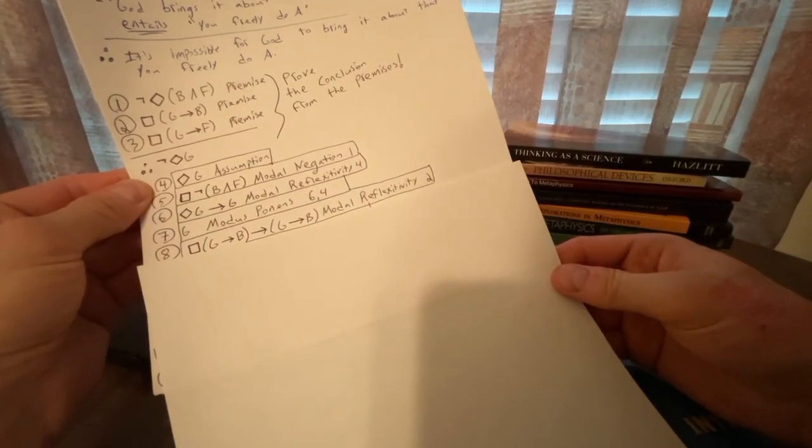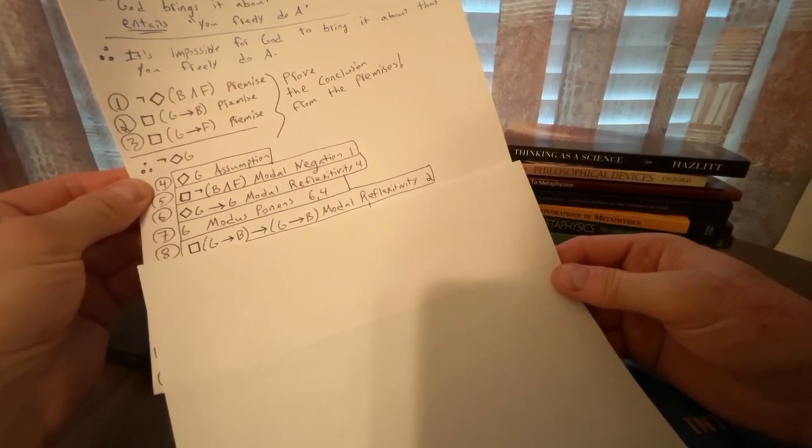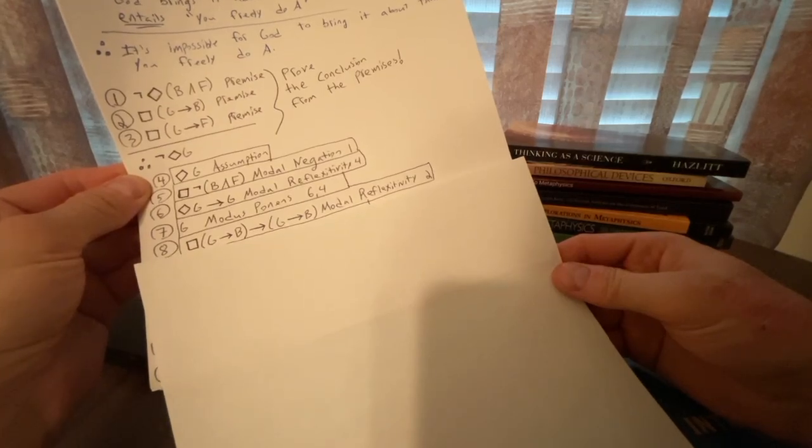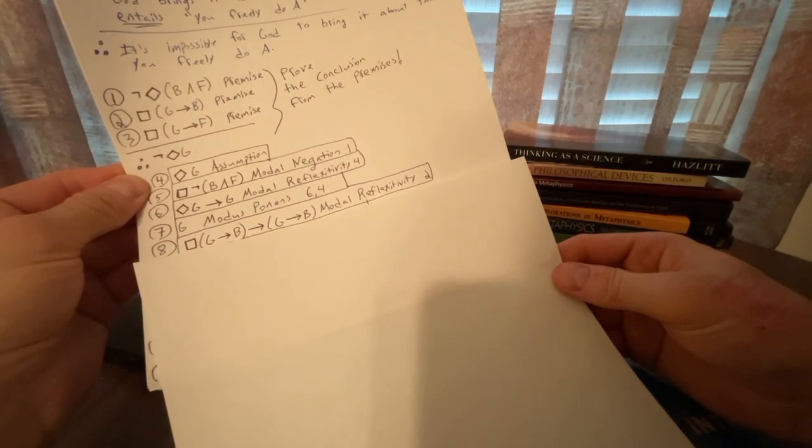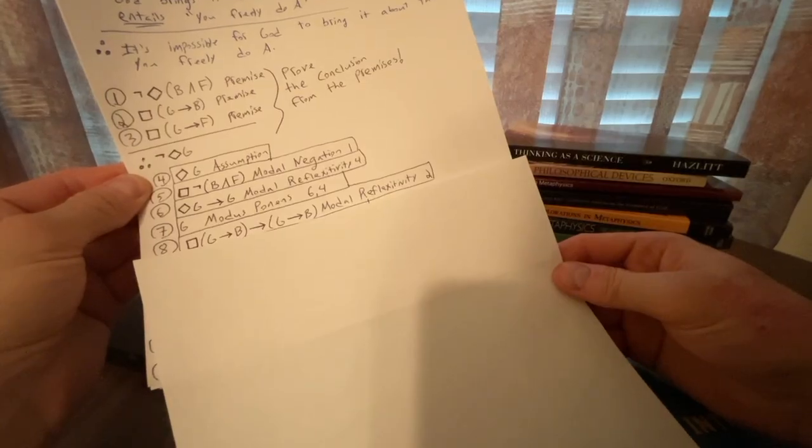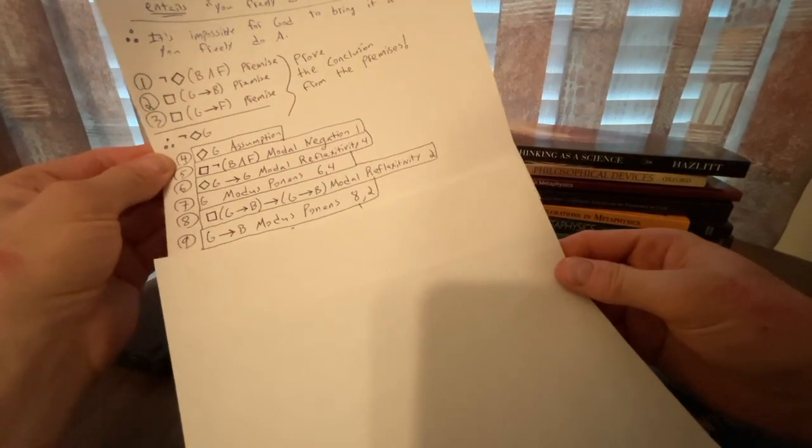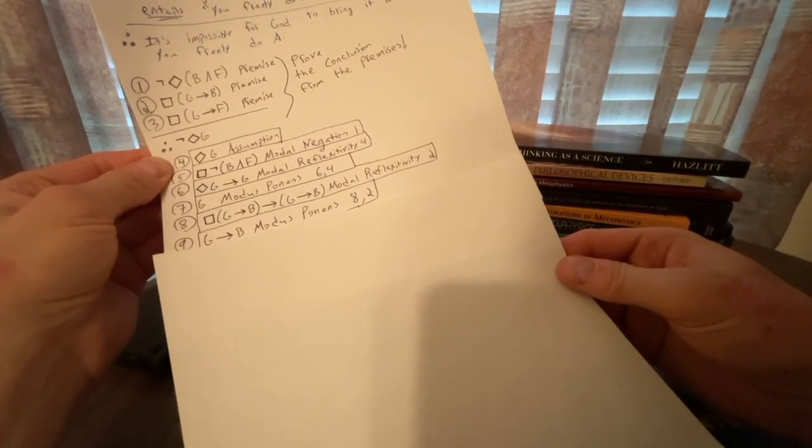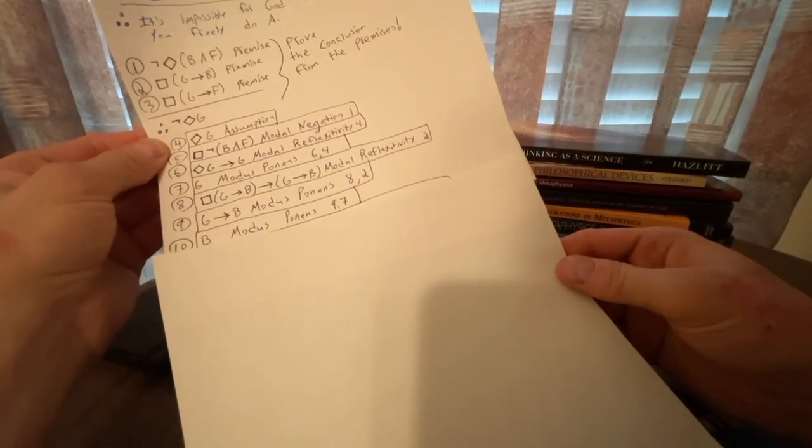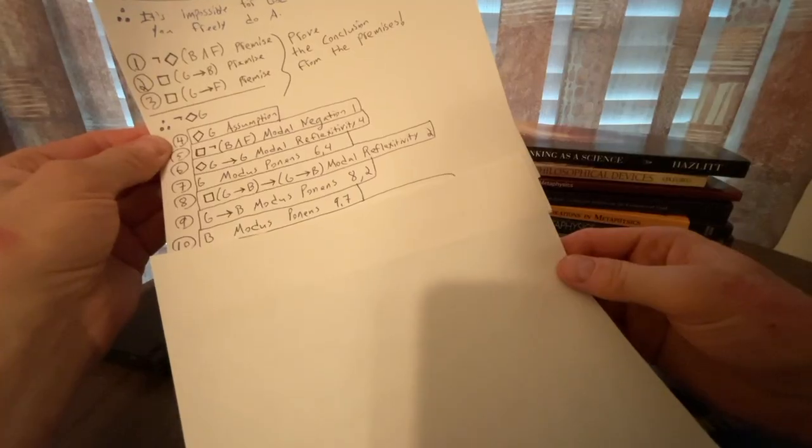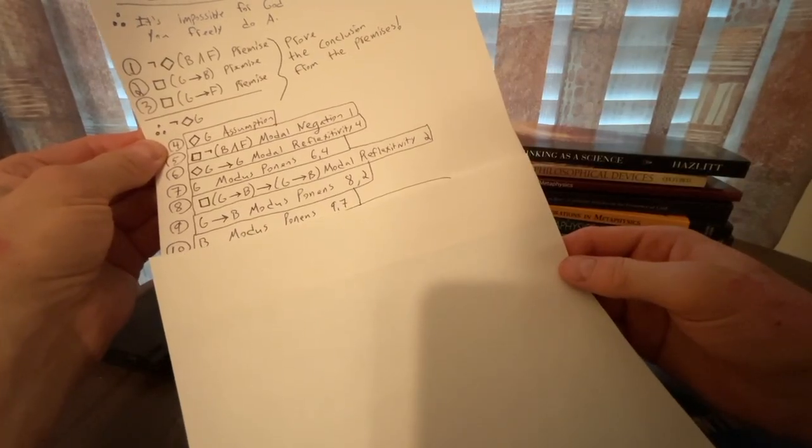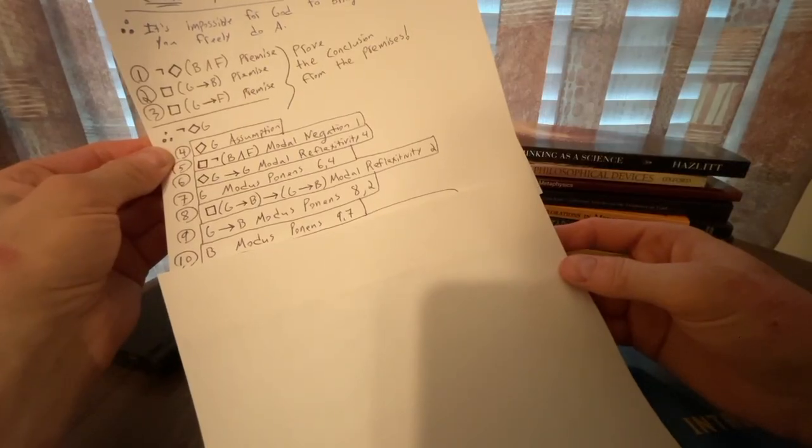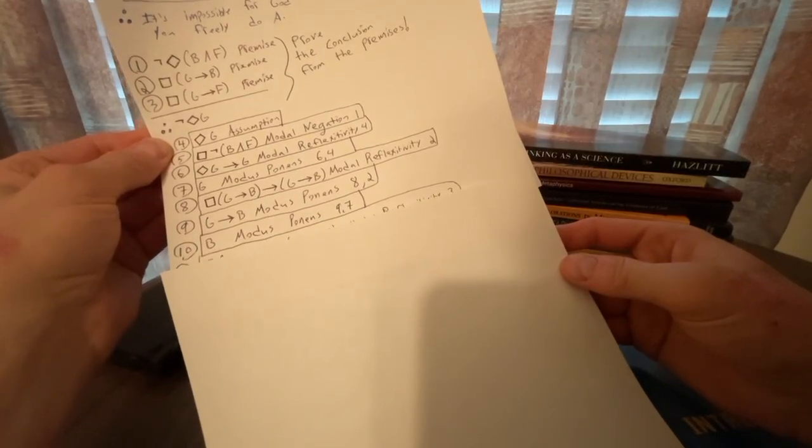So we can do a modus ponens inference for line seven to get a G, again by modus ponens with line six and four. For line eight, we're going to work with line two dealing with modal reflexivity to get box parentheses G arrow B close parentheses arrow parentheses G arrow B close parentheses. So then we could actually work with that. So for line nine, we can do our modus ponens inference with lines eight and two to get if G then B. For line 10, we can then get a B from another modus ponens inference with lines nine and seven. So note that we do have that G there to then get our B.